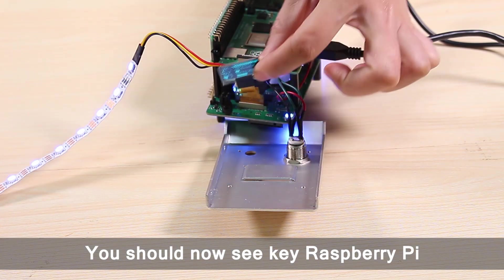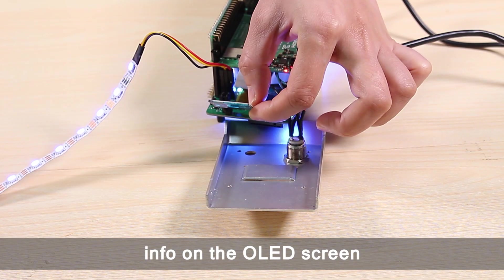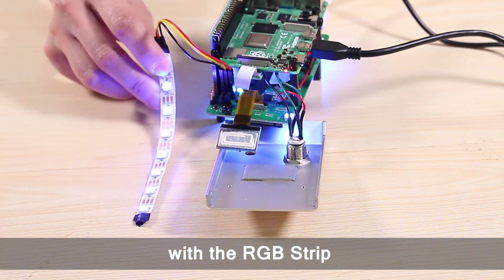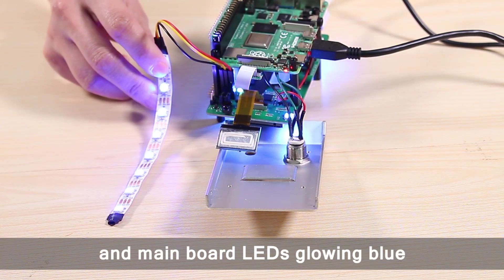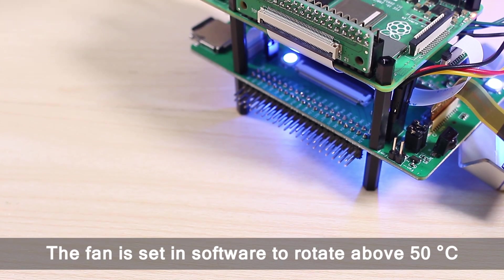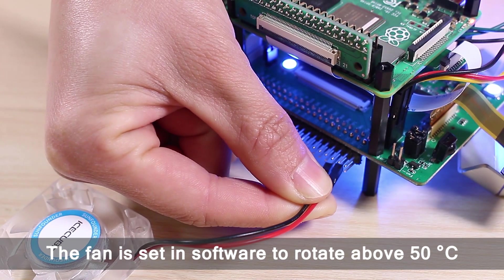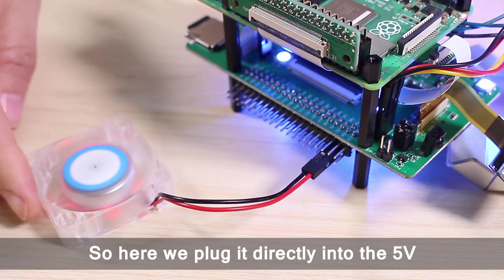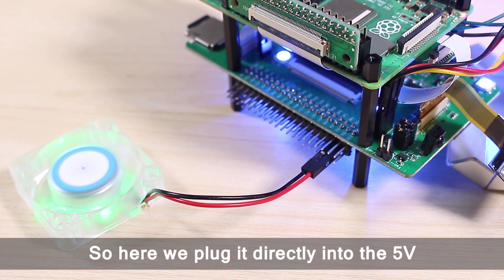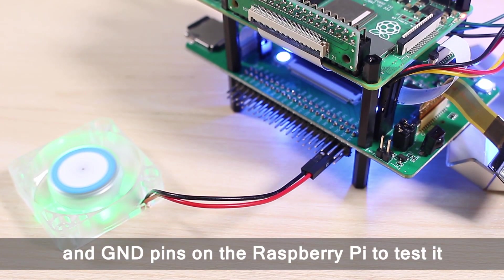You should now see key Raspberry Pi info on the OLED screen, with the RGB strip and main board LEDs glowing blue. The fan is set in software to rotate above 50 Celsius temperature. So here we plug it directly into the 5 volts and GND pins on the Raspberry Pi to test it.